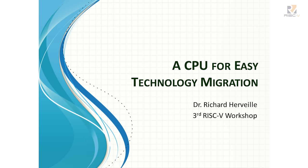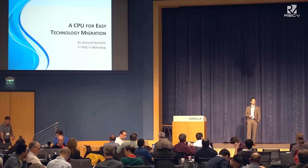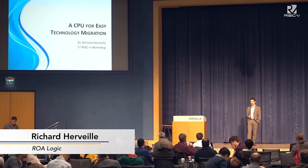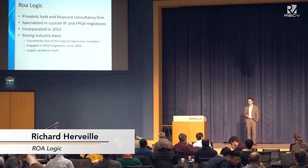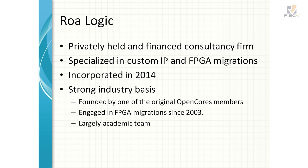I want to present how RawLogic uses the RISC-V to optimize FPGAs and implement ASICs for technology optimization. RawLogic is a very small consultancy firm. We specialize in custom IP and FPGA migrations. It's a new firm — we just got incorporated last year — with a strong academic background. Most of the employees and contractors are PhDs and masters.